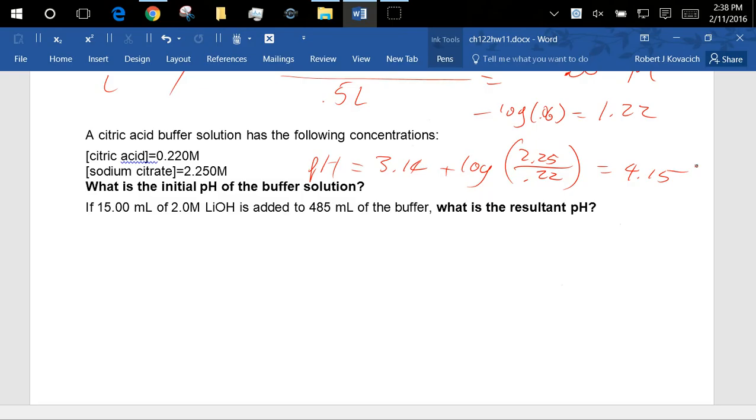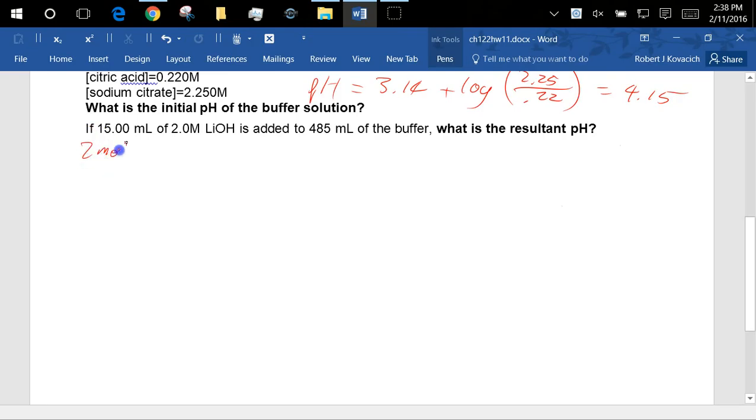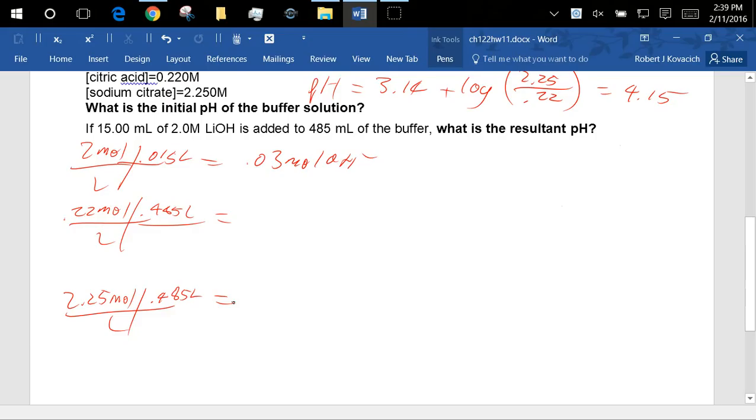So I'm going to add that same lithium hydroxide to this, and I want to see how much the pH changes this time. So I'll take 2 mole per liter times 0.015 liters, so 0.03 mole OH, and 0.22 mole per liter and 0.485 liters. So 0.22 times 0.485, and 2.25 times 0.485, so I get 0.1067 mole HA, 1.091.